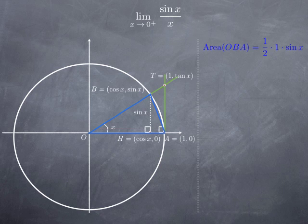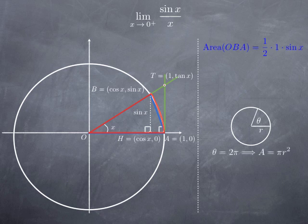Let's look at the larger area — the angular sector O, B, A. To calculate the area of an angular sector in general: if a circle has radius r and the central angular sector has radian measure theta, then for a full revolution (measure 2π) the area is πr². For a sector of measure one radian, the area is 2π times less, in other words one half r².